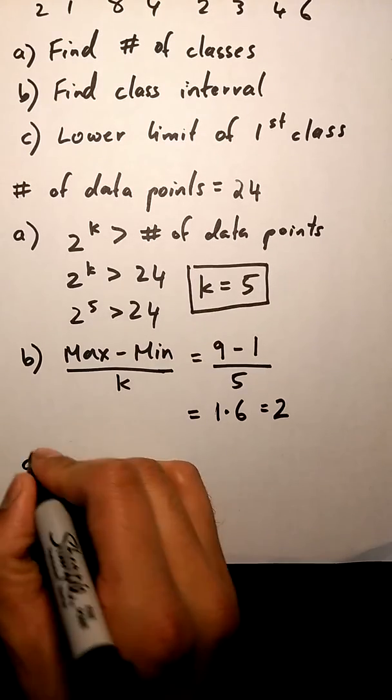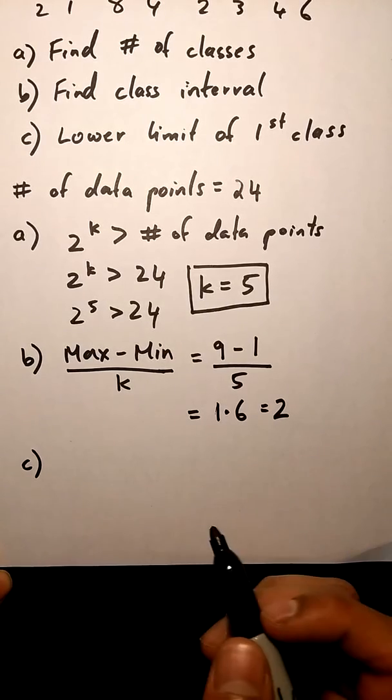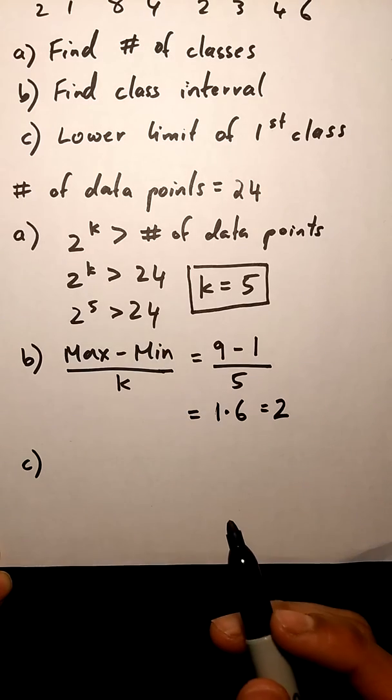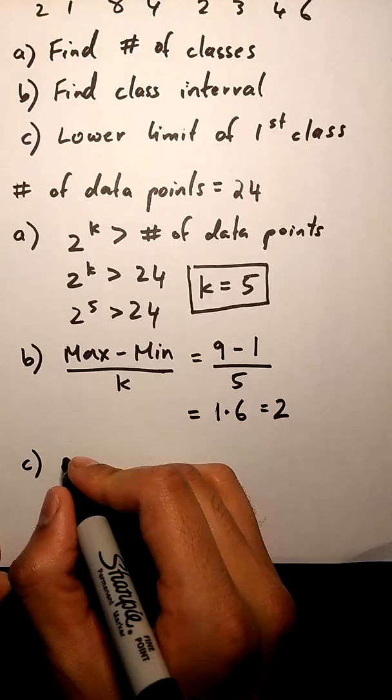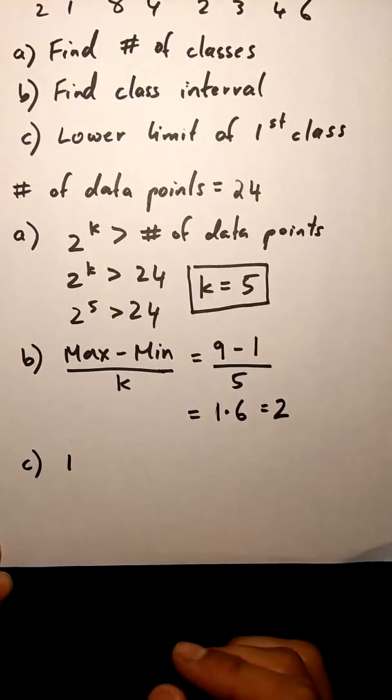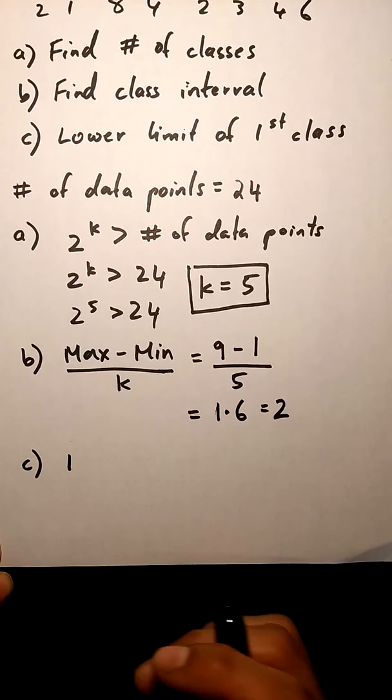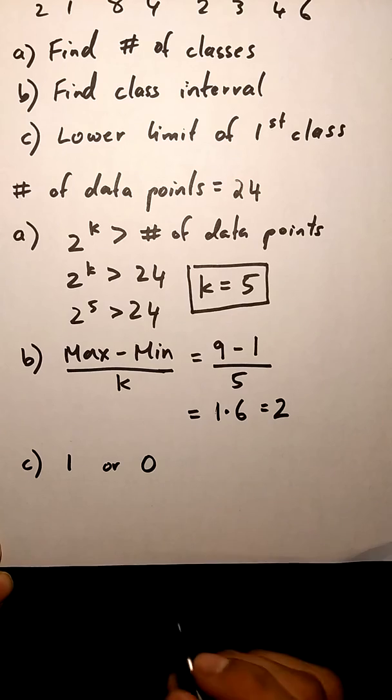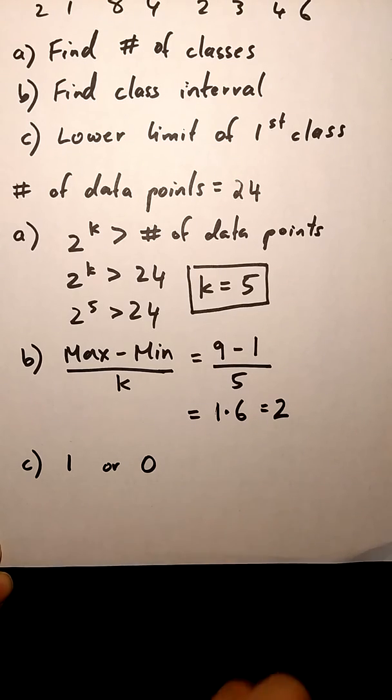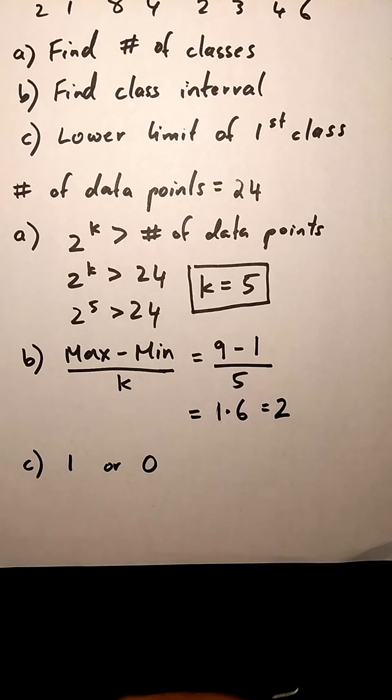Last thing we need to do is decide what our lower limit of our first class is gonna be. The easiest way to choose this number is to just pick the lowest number in our data set. So in this case it could have been 1, but you could also pick a number slightly lower than our lowest number, so you could have also picked 0 as well. In this case, both are valid answers. If you always want to get the right answer, just pick the lowest number in our data set.